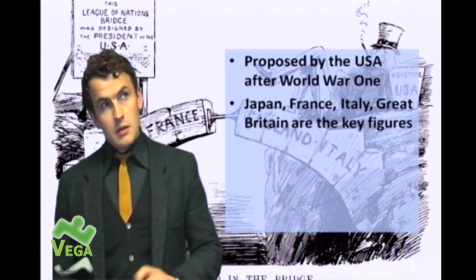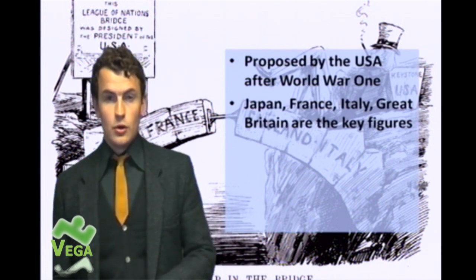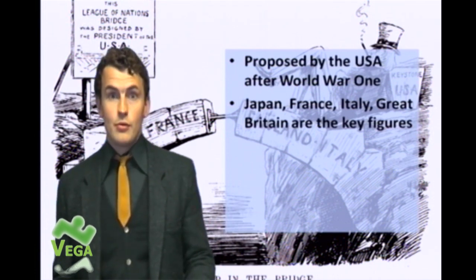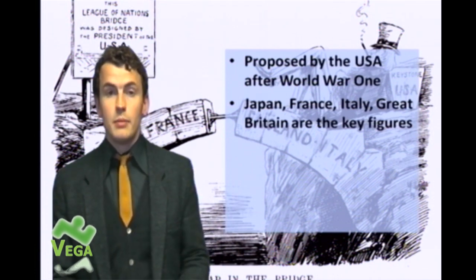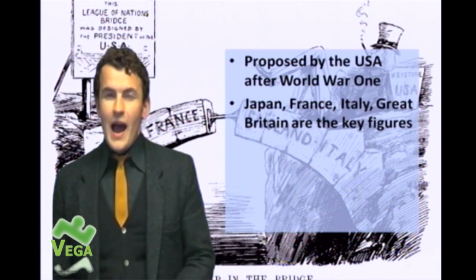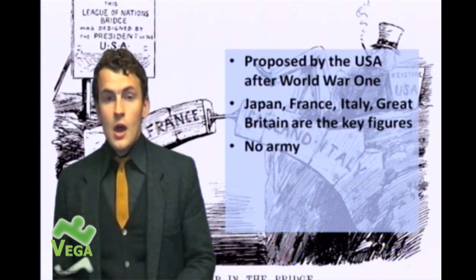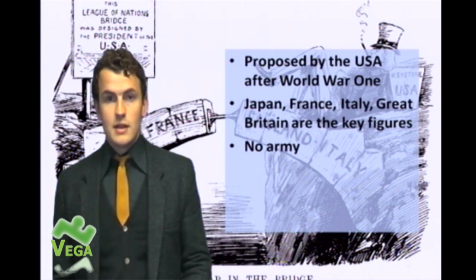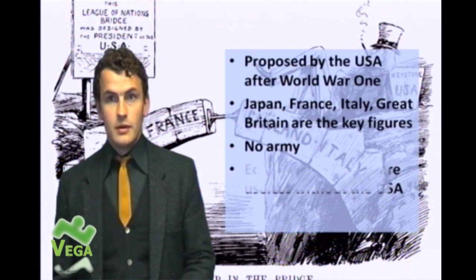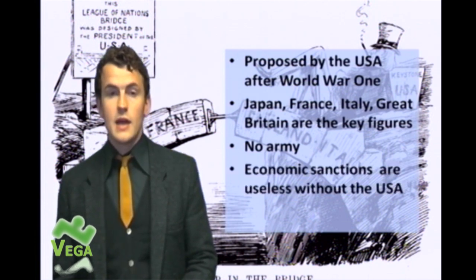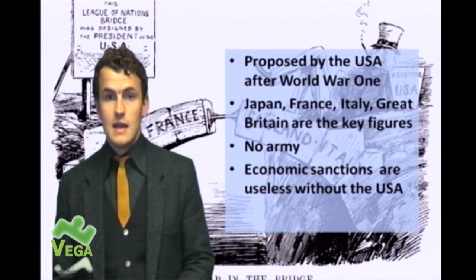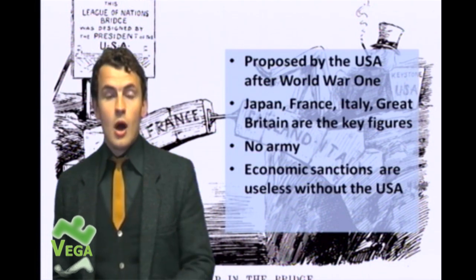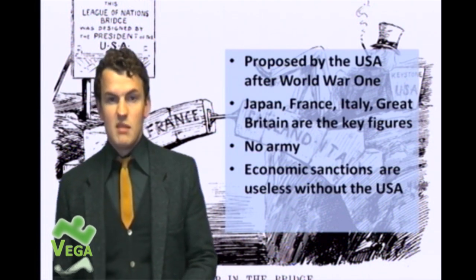The League of Nations had two key things they could do to maintain world peace. First, they could use military threats against those threatening world peace. However, the League of Nations didn't have an army. Second, the League could impose economic sanctions on anyone threatening world peace. However, if the USA was not part of the League, those economic sanctions were virtually useless. The USA was the main economic powerhouse in the world at that time, and without them on board, economic sanctions were basically groundless.